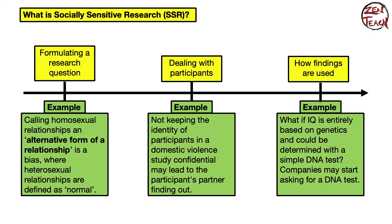Now let's talk about how findings are used. Remember the IQ-from-DNA example: what if companies started requiring your DNA test or IQ score before hiring you? What if you could only get employed if you had a certain IQ — wouldn't that be discrimination based on intelligence? These significant questions will come up more and more as technology enables us to analyze humans better and better.